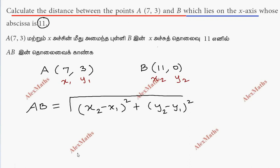If we substitute, we have root of (11 minus 7) whole square plus (0 minus 3) whole square.